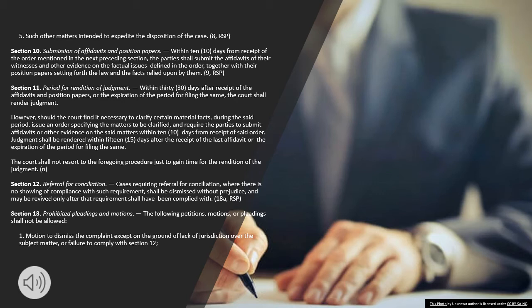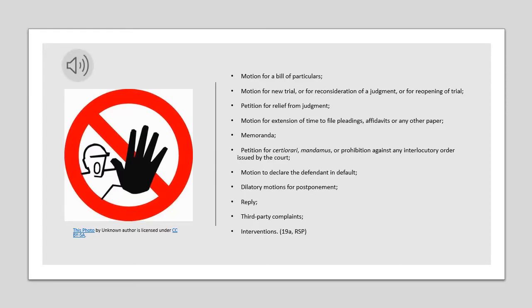Section 13. Prohibited Pleadings and Motions. The following petitions, motions, or pleadings shall not be allowed: 1. Motion to dismiss the complaint except on the ground of lack of jurisdiction over the subject matter, or failure to comply with Section 12. 2. Motion for a bill of particulars. 3. Motion for new trial, or for reconsideration of a judgment, or for reopening of trial. 4. Petition for relief from judgment. 5. Motion for extension of time to file pleadings, affidavits or any other paper. Memoranda. 6. Petition for certiorari, mandamus, or prohibition against any interlocutory order issued by the court. 7. Motion to declare the defendant in default. Dilatory motions for postponement. Reply. Third-party complaints. Interventions.